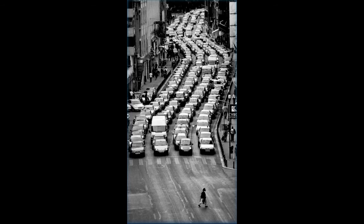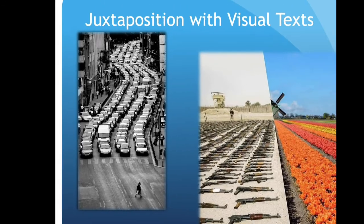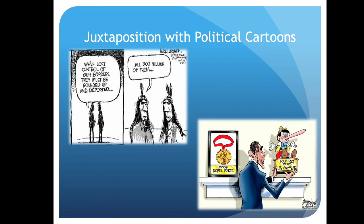That part of the picture is juxtaposed with the simple, individual, solitary figure at the bottom casually walking across the street. Then we could make that interpretive jump: what's the author trying to say? Probably something about the balance of technology versus the individual in an urban area. The political cartoon examples show juxtaposition as well. One cartoon has two shadowy characters saying, 'We've lost control of our borders — they must be rounded up and deported,' juxtaposed with two Native Americans on the right saying, 'All 300 million of them.' So we're getting this idea of the modern versus the traditional, juxtaposing views of immigration.